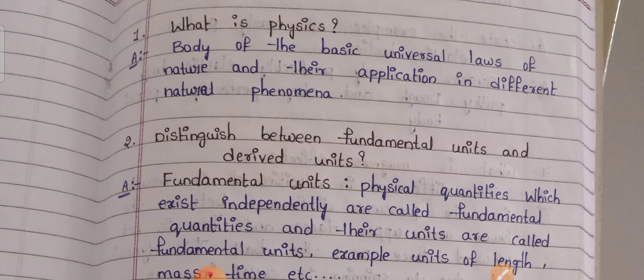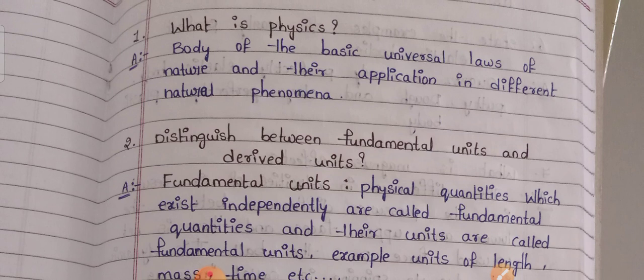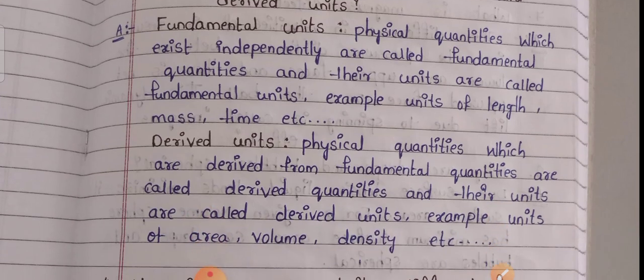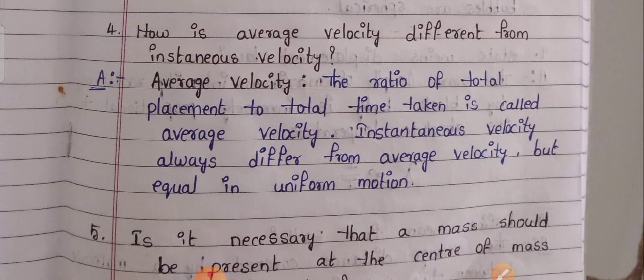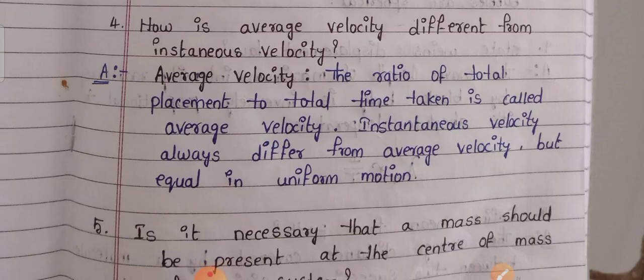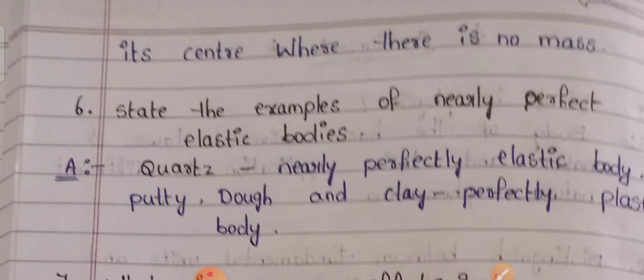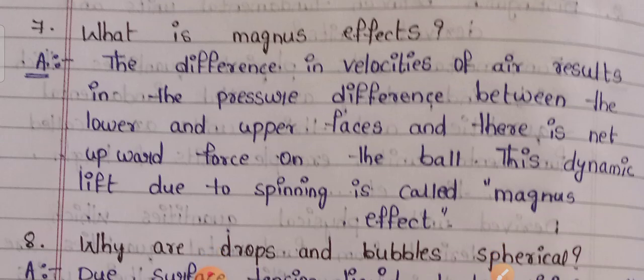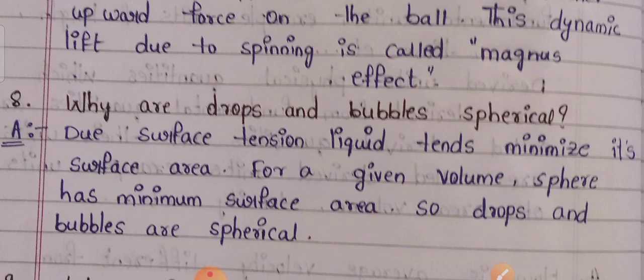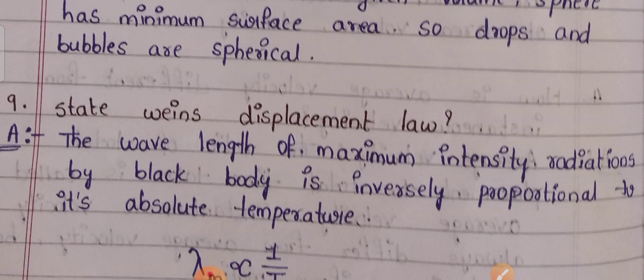What is physics? Please go through the answers — I am not explaining or reading them aloud as the video would be too lengthy. Questions covered include: distinguish between fundamental units and derived units; how is average velocity different from instantaneous velocity; state examples of nearly perfect elastic bodies; what is the Magnus effect; why are drops and bubbles spherical; and state Wien's Displacement Law.